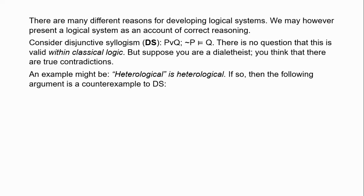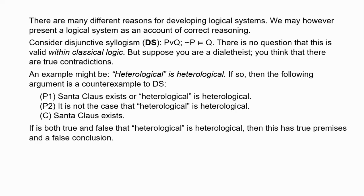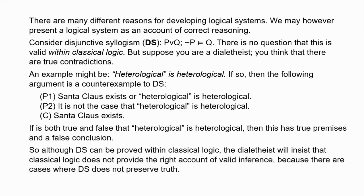There is an enormous debate about whether there actually are any true contradictions. Most philosophers try to explain away the appearance of contradiction, but a few — called dialetheists — just embrace it. Suppose they are right: suppose 'heterological is heterological' is a true contradiction. Then we can have this argument: 'Santa Claus exists or heterological is heterological; it is not the case that heterological is heterological; so Santa Claus exists.' This gives us an instance of disjunctive syllogism with true premises and a false conclusion.